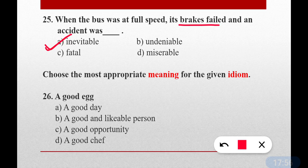Now, choose the most appropriate meaning for the given idiom. Question number twenty-six: A good egg. What is the correct meaning? A good egg means a good and likeable person — option B is correct. You can easily remember: a good egg = a good person.